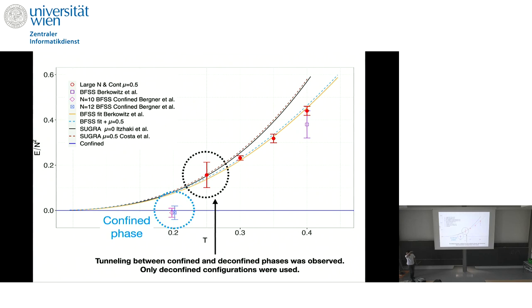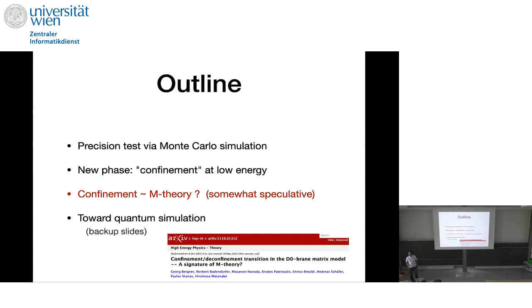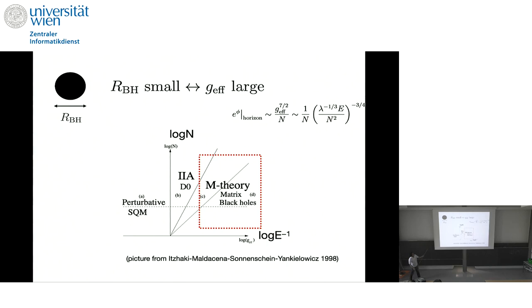Yeah, this will come in, I will explain that from now. And we can only give some speculation. And we need more investigation. So it's somewhat speculative. But if you go back to this paper, Itzhaki-Maldacena-Sonnenschein-Yankielowicz. They say that, okay, so type 2A black zero brane should be good description at proof limit. But if we go to fixed N and go to lower temperature, effective coupling grows.